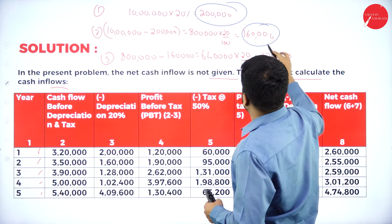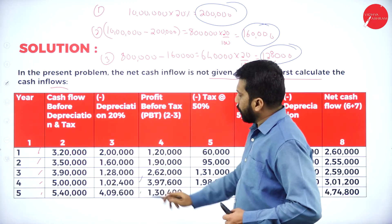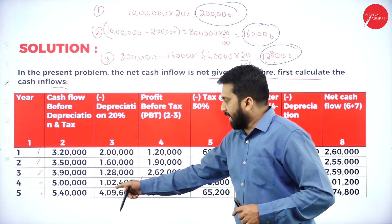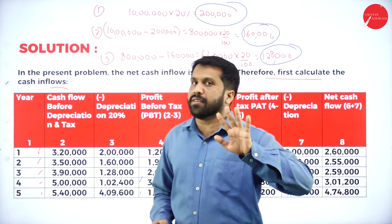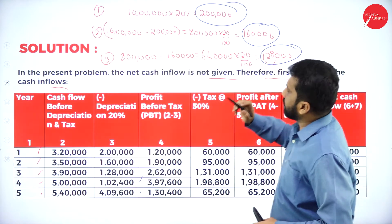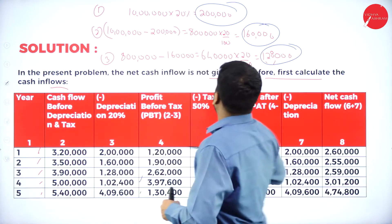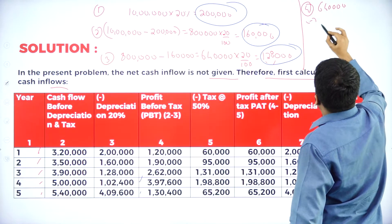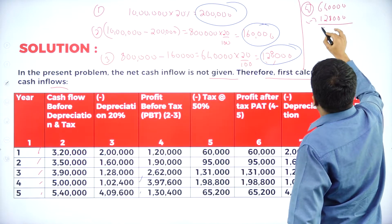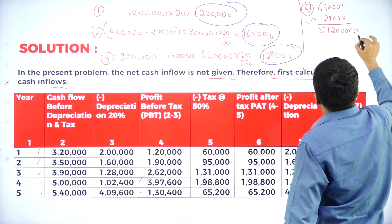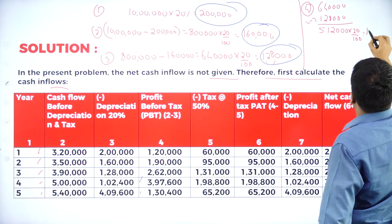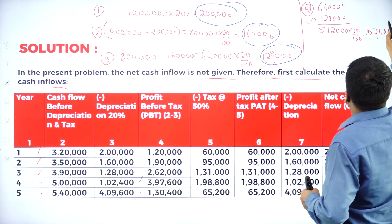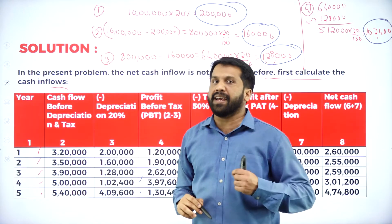So depreciation values so far: year 1 = 2 lakh, year 2 = 1 lakh 60, year 3 = 1 lakh 28. For year 4: 6 lakh 40,000 minus 1 lakh 28,000 = 5 lakh 12,000; 5 lakh 12,000 into 20 percent = 1 lakh 2,400. Year 4 answer is 1 lakh 2,400.